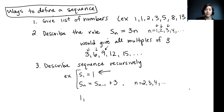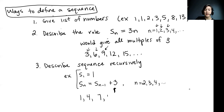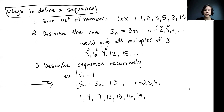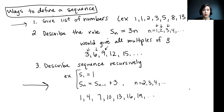The rule says that to find the term Sn, we take the previous term Sn minus 1 and add 3. Using this rule, we know the first term is 1. To get S2, we take 1 and add 3 to get 4. Then 4 plus 3 gives us 7, then 10, and we just keep adding 3 over and over. If we have a recursive rule, we can always produce the list of numbers, and we can move between these different ways of describing our sequence.